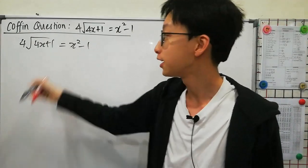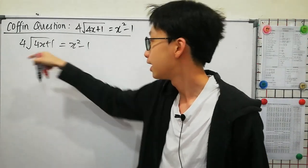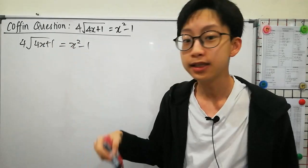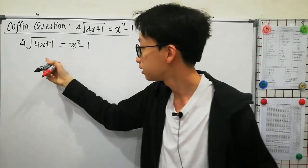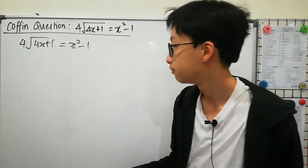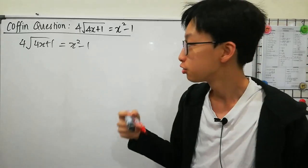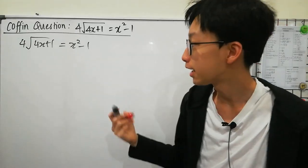First, we look at the question. We have a square root and a square. Is it a cubic question or a quadratic question? We don't know, right? So what should we do? What can we do?